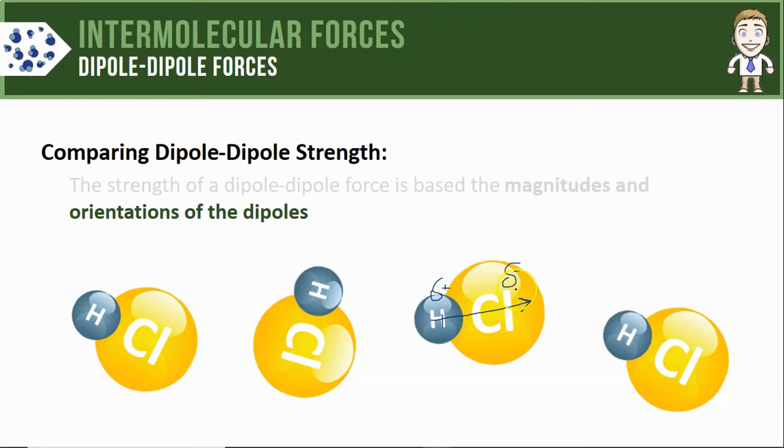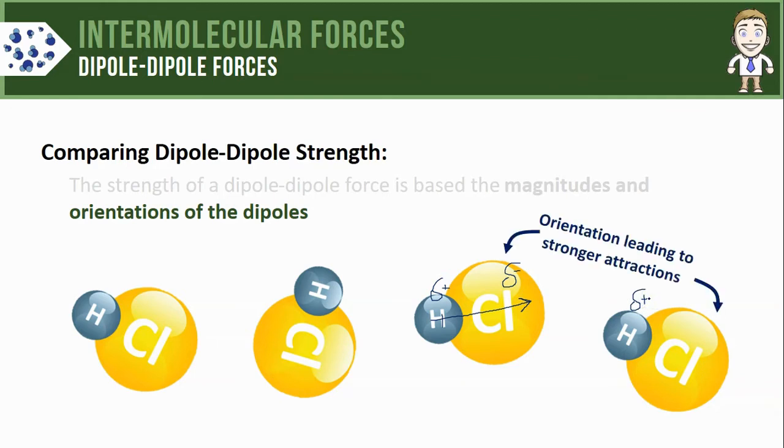If you look at these two molecules on the right you'll notice that the partially negative chlorine is oriented almost directly towards the partially positive hydrogen in the second molecule. That's an orientation that's going to lead to stronger attraction since the negative and positive poles are directed towards one another.